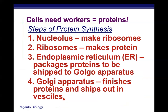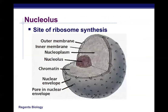Making a protein is a huge part of what cells do, and it requires the coordination of many organelles — the nucleus, the ribosomes, the endoplasmic reticulum, and the Golgi apparatus. It's important not just to memorize the functions of these structures but to think about how they work together. I'll come back to this after we talk about ribosomes, the ER, and the Golgi apparatus. The nucleolus inside the nucleus is where ribosomes are made.